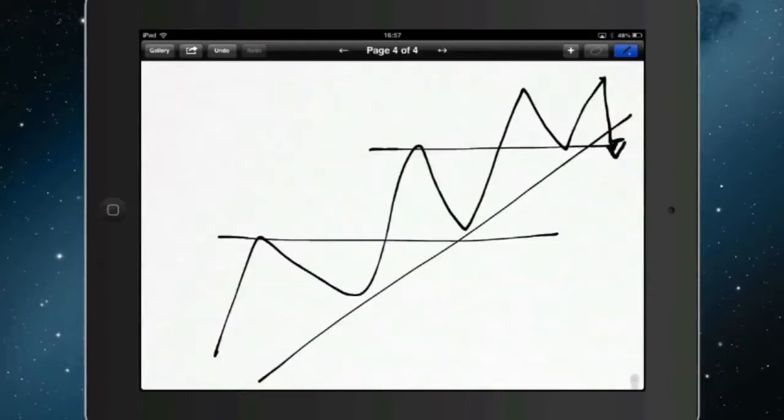So the notion of a trending market leads directly to the fact that once you've entered the market at, say, here, when the market has bounced off this prior high, the stop could be either beneath the diagonal or beneath the horizontal.